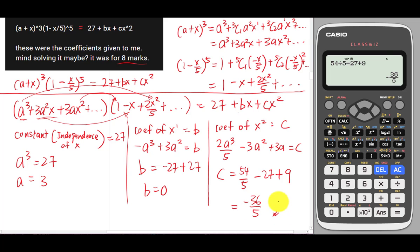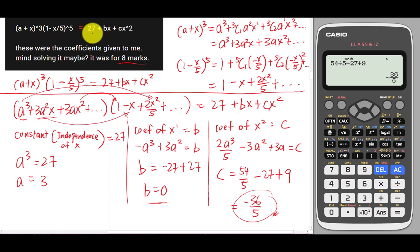It's a bit unusual for an IGCSE question to get zero for b and a fraction like -36/5 for c — normally I'd expect integers. But this is how I'd solve this kind of question, unless the student made a mistake typing the question. That's my final answer. See you in the next video, bye!